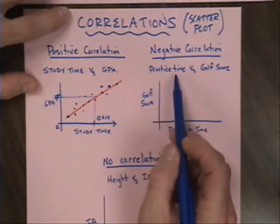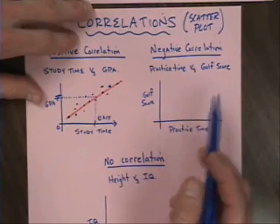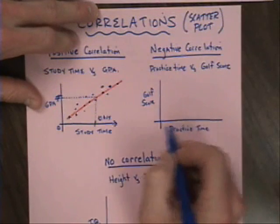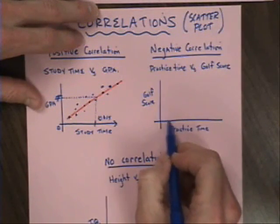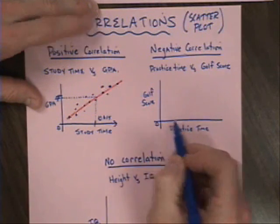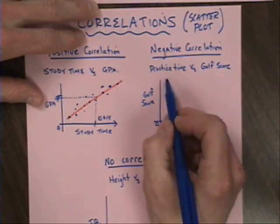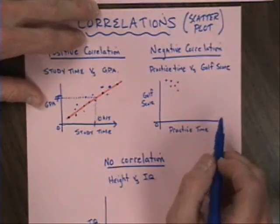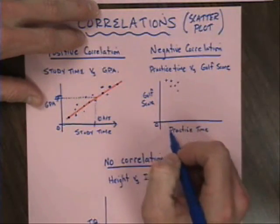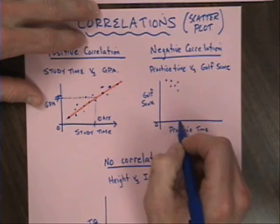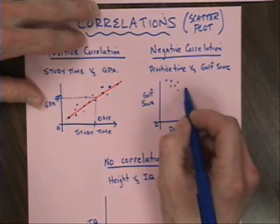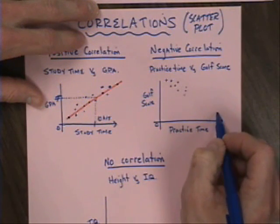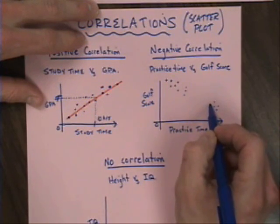Let's look at a negative correlation: practice time versus golf score. Now you might think negative sounds bad, but golfers all around want their score to go down — that's the sign of a good golfer. If I have someone who practices very little, over towards zero hours per week, their golf score would most likely be quite high. I don't practice, I don't really know how to play all that well, so it takes me a lot more strokes to get the golf ball into the cup. If my practice time increases, it would make sense that my score starts to come down, and if I really devote myself to the sport and practice a lot, my golf score might end up very close to my best score.